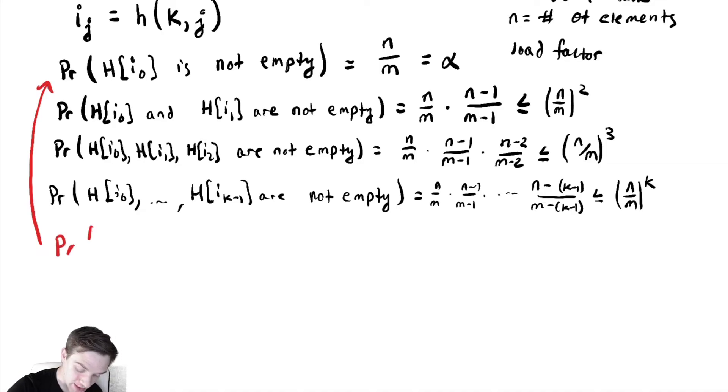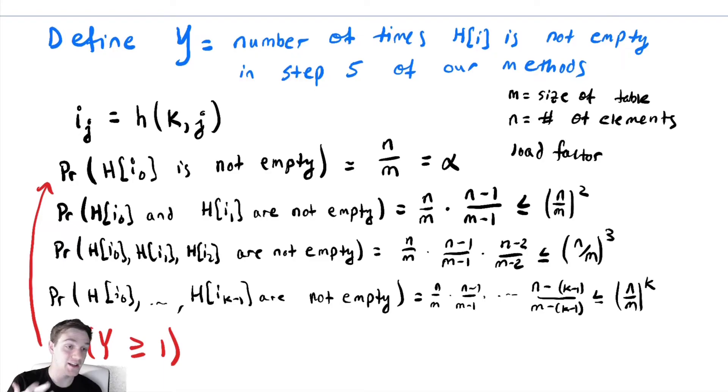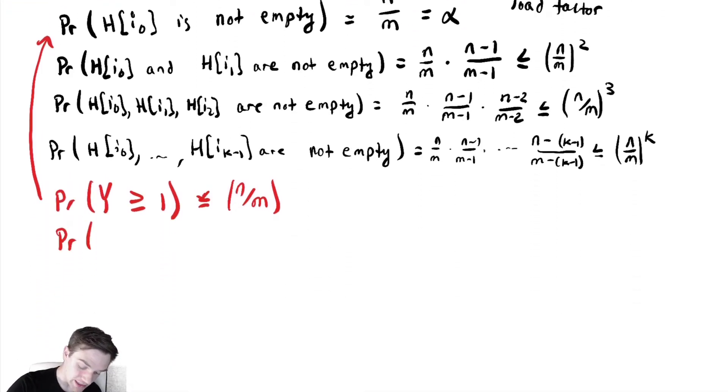This first line is the probability that Y ≥ 1, the number of times we needed to execute that line, the number of times h[i] wasn't empty. This is less than or equal to n/m. Similarly, Pr(Y ≥ q) for any value q is less than or equal to (n/m)^q, which is exactly what we said in the last line.